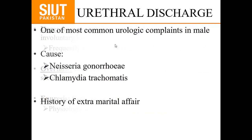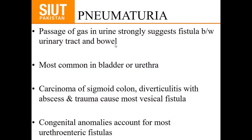Urethral discharge is one of the most common urologic complaints in males. Causes include gonococcal — mostly Neisseria gonorrhea — or non-gonococcal, such as Chlamydia. We must ask about history of extramarital affairs. Pneumaturia — passage of gas — strongly suggests a fistula between the urinary tract and the bowel, mostly between the bladder or urethra and the bowel. Causes include carcinoma of the sigmoid colon, diverticulitis with ruptured abscess, or trauma. Congenital anomalies account for most urethroenteric fistulas in children.